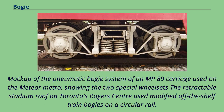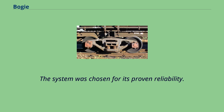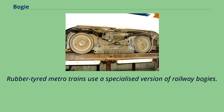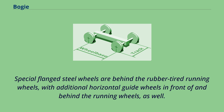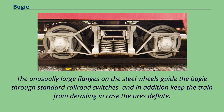A mock-up of the pneumatic bogey system of an MP89 carriage used on the Paris Meteor Metro shows two special wheelsets. The retractable stadium roof on Toronto's Rogers Centre used modified off-the-shelf train bogeys on a circular rail, chosen for its proven reliability. Rubber-tired metro trains use a specialized version of railway bogeys, with special flange steel wheels behind the rubber-tired running wheels and additional horizontal guide wheels in front of and behind the running wheels. The large flanges on the steel wheels guide the bogey through standard railroad switches and keep the train from derailing if the tires deflate.